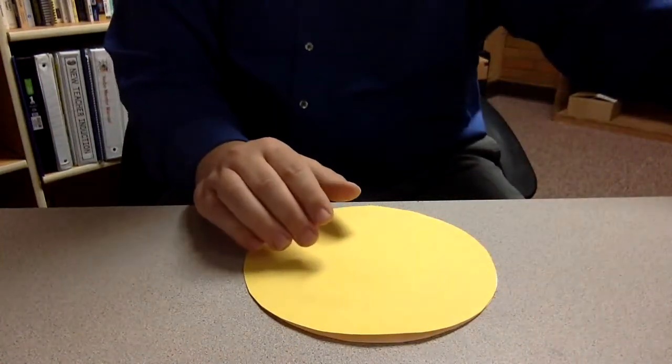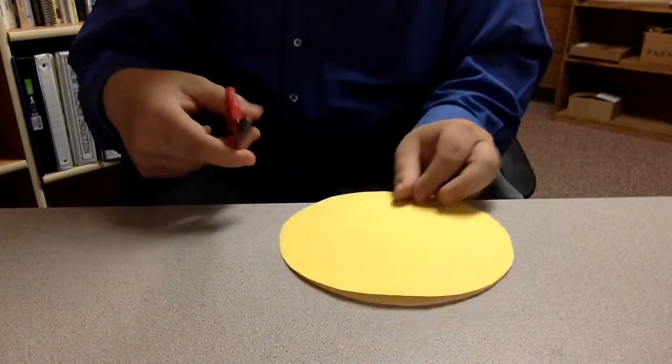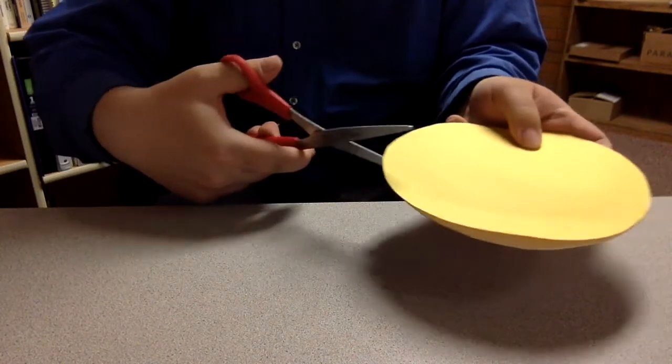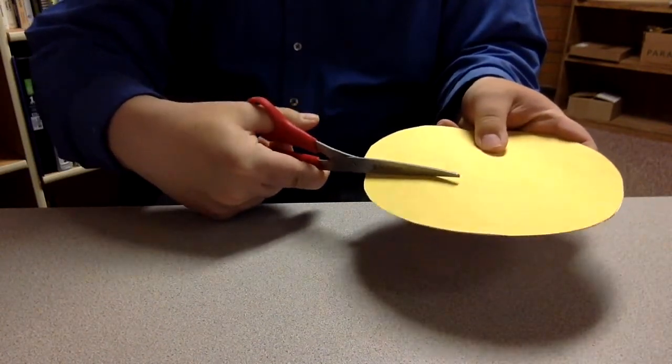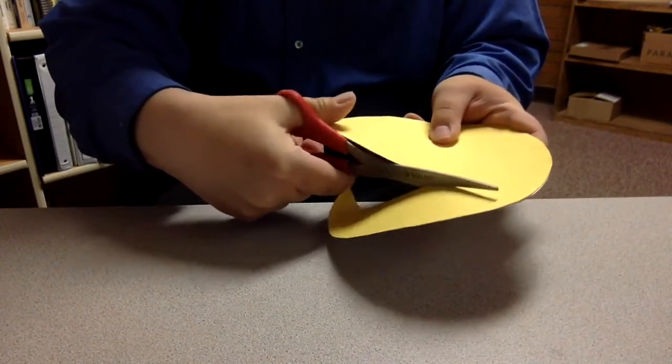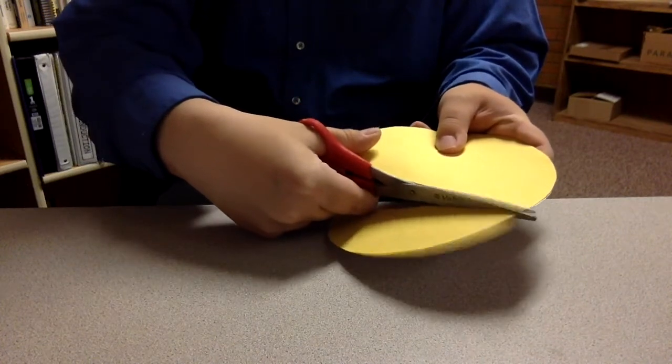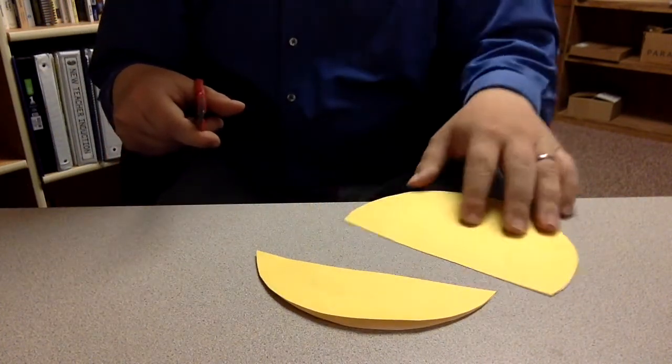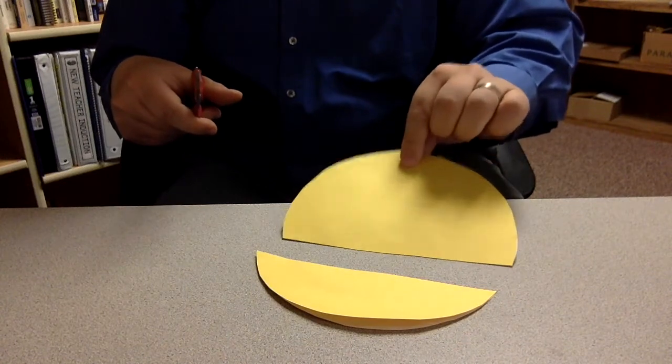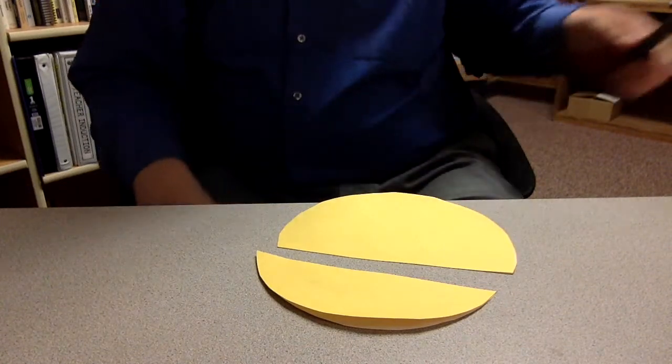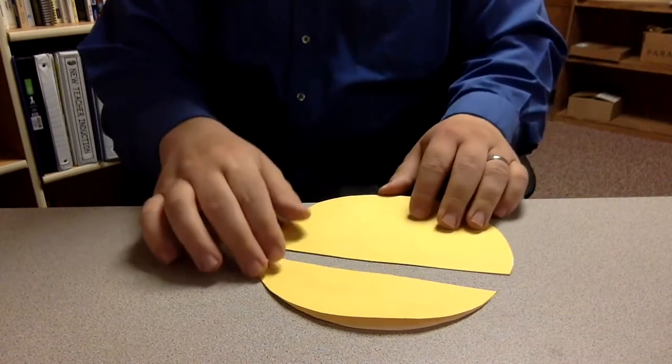Then you'll need scissors to cut off about the bottom third of that planet. And that bottom third will be the mouth, the bottom of the mouth. And the top two thirds are going to be the top of the head of that planet puppet.